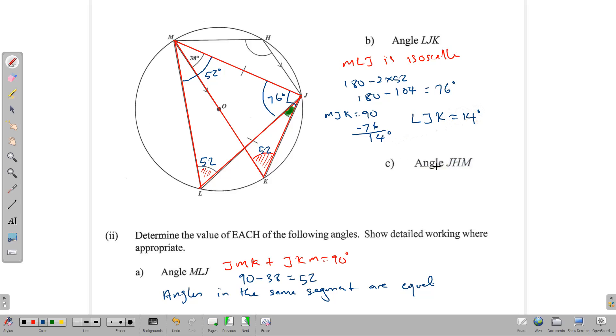The last one, JHM, that is the angle here at the top. We can find that angle by using the idea that this shape here is a cyclic quadrilateral. And one of the properties of a cyclic quadrilateral is that opposite angles are supplementary. So this angle is supplementary to this, meaning that JHM plus 52 is equal to 180 degrees. And therefore JHM is equal to 180 minus 52, and that gives us 128 degrees.